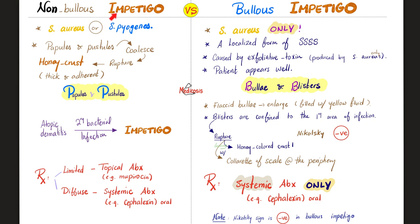I'll talk about non-bullous impetigo first. Non-bullous impetigo could be caused by staph or strep. It starts with papules and pustules that coalesce — they gather together — then they rupture, leaving a honey crust which is thick and adherent.